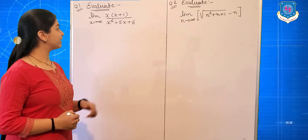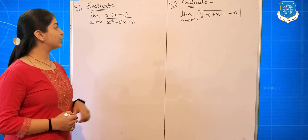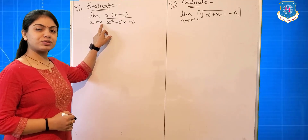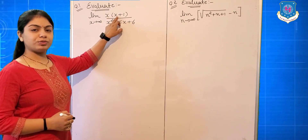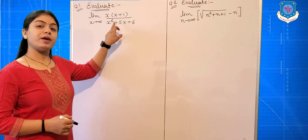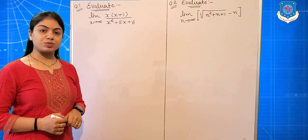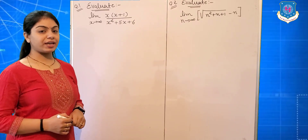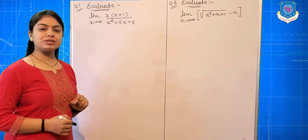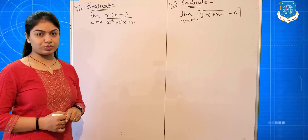Now let's start the first question. Question 1: Evaluate limit x tends to infinite of x(x+1) upon x² + 5x + 6. In this question we can use the standard form: limit x tends to infinite, 1 upon x is equal to 0.